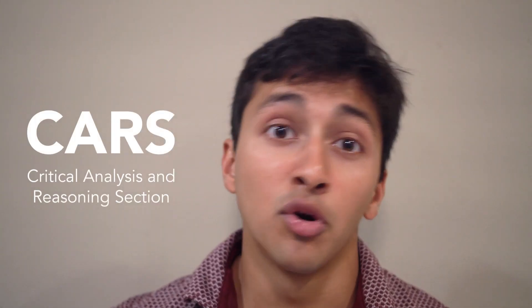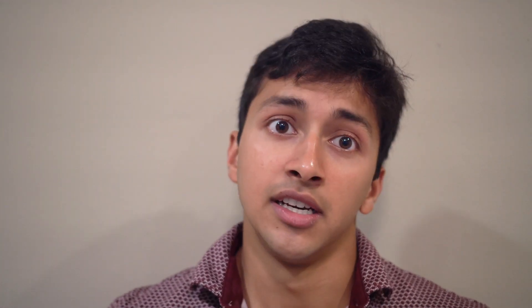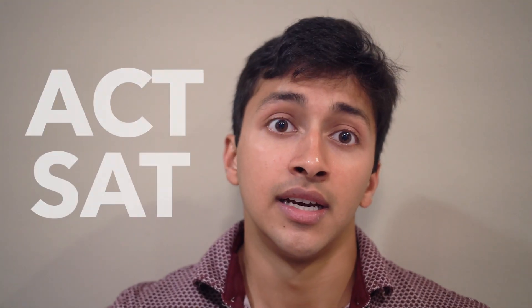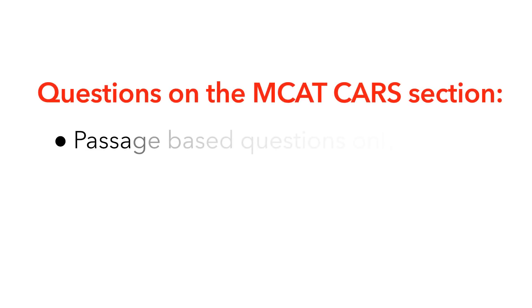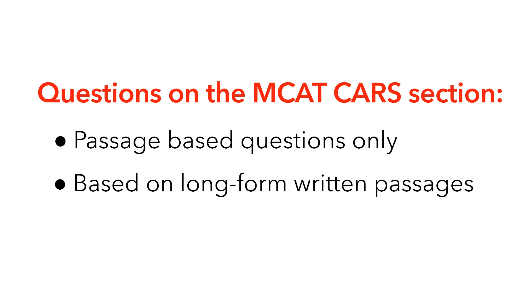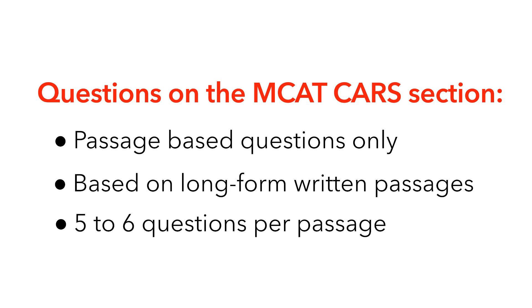Many students, whether they're just starting their MCAT preparation or are months into their journey, are apprehensive of CARS. The Critical Analysis and Reasoning section, more often referred to as CARS, is essentially a test of verbal reasoning. You may have encountered similar sections when you took the ACT or SAT. However, the questions on the MCAT CARS section tend to have a few major differences. Questions include passage-based questions only — based on long-form written passages — and each passage contains five to six questions. In contrast to standardized tests from high school, there are no standalone questions. Each CARS question is associated with a passage, with an average of five to six questions per passage for a total of 53 questions within the section. This unique format can make this seemingly simple verbal reasoning section extremely challenging.